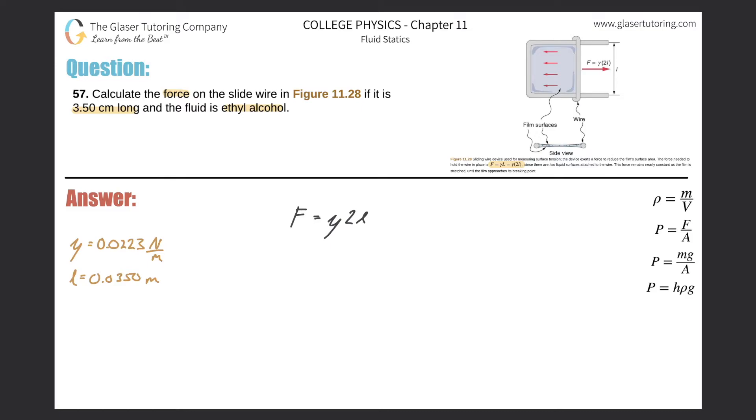So really this one is fairly straightforward. We're just going to plug in the values. In order to calculate the force, we need to know the surface tension. The surface tension is a function of what fluid we're talking about. So it's talking about ethyl alcohol. If you look that up in your table, you realize it's 0.0223 newtons per meter. So we can just plug that value in.